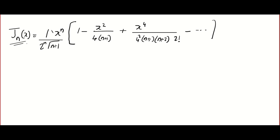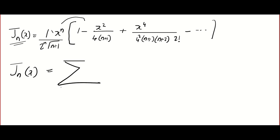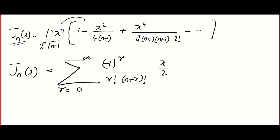After taking that value inside and simplifying, we get the summation version, which you also have to memorize: J_n(x) = Σ (r=0 to ∞) [(-1)^r / (r! · Γ(n+r+1))] · (x/2)^(n+2r). This is the expanded version and that is the summation version — memorize both. For J_{−n}(x), it is very simple: wherever you see n, replace it with −n.